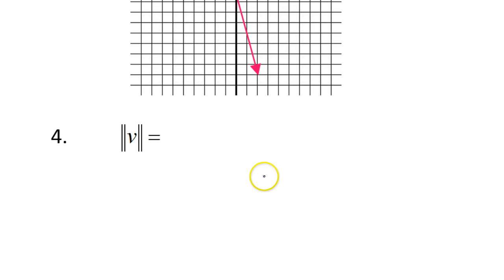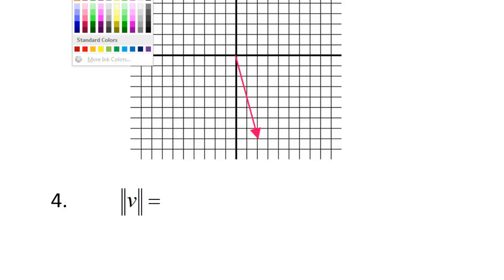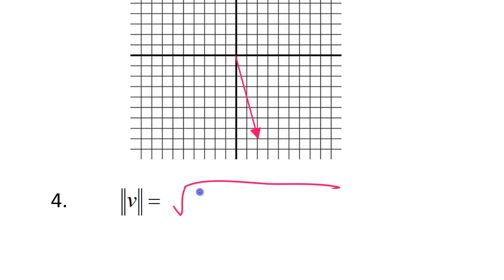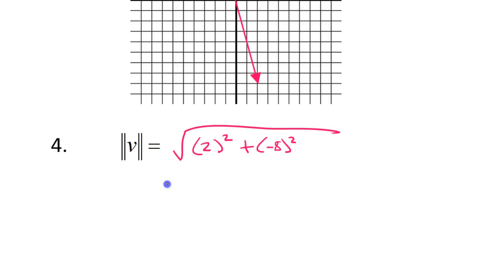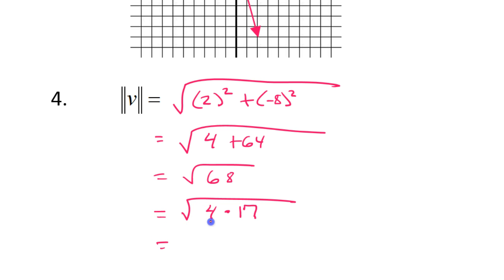Similarly, let's calculate the magnitude of vector v. This one is 2, negative 8. So we will do the square root of 2 squared plus negative 8 squared. That's going to equal the square root of 4 plus 64, which is the square root of 68. That simplifies to 4 times the square root of something — so that's going to be 2 root 17. That is the magnitude of vector v.